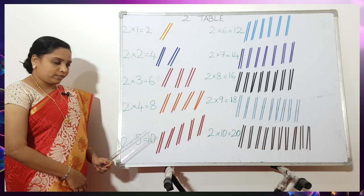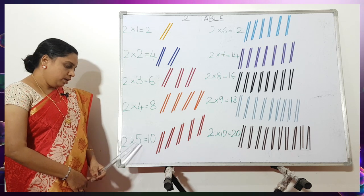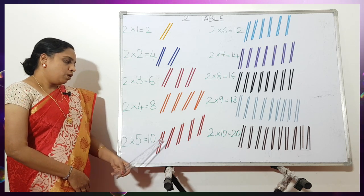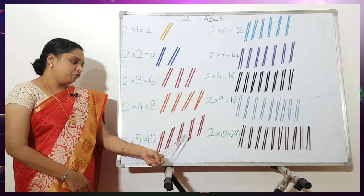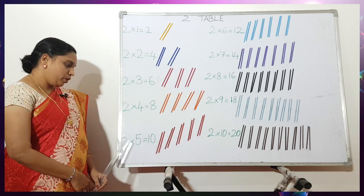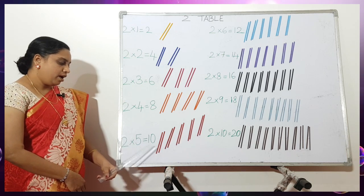Then the next one, children: 5 times — 1, 2, 3, 4, 5 — 5 times 2 is 10.